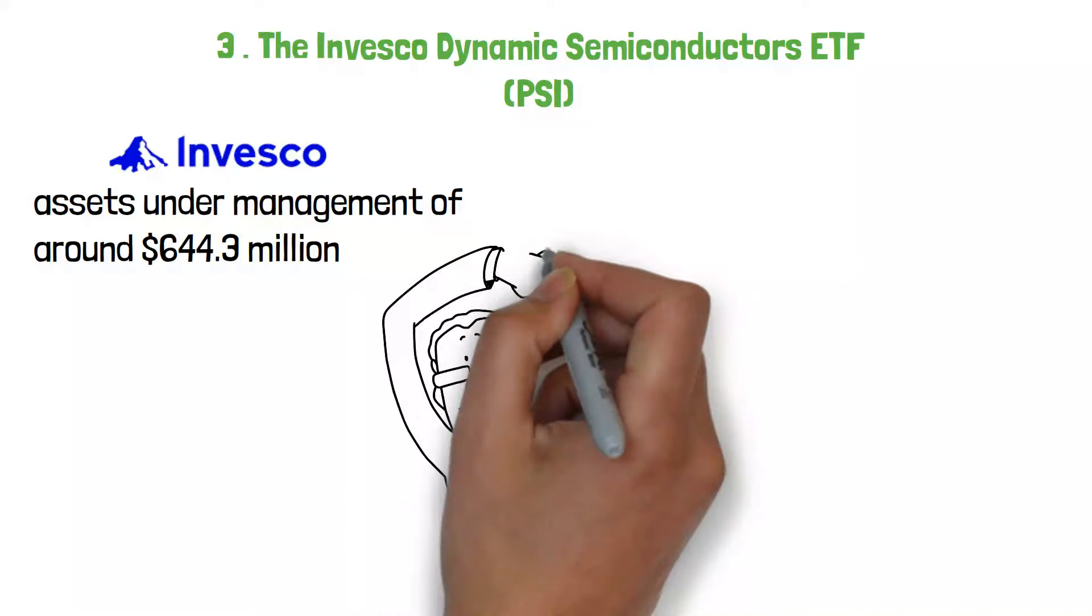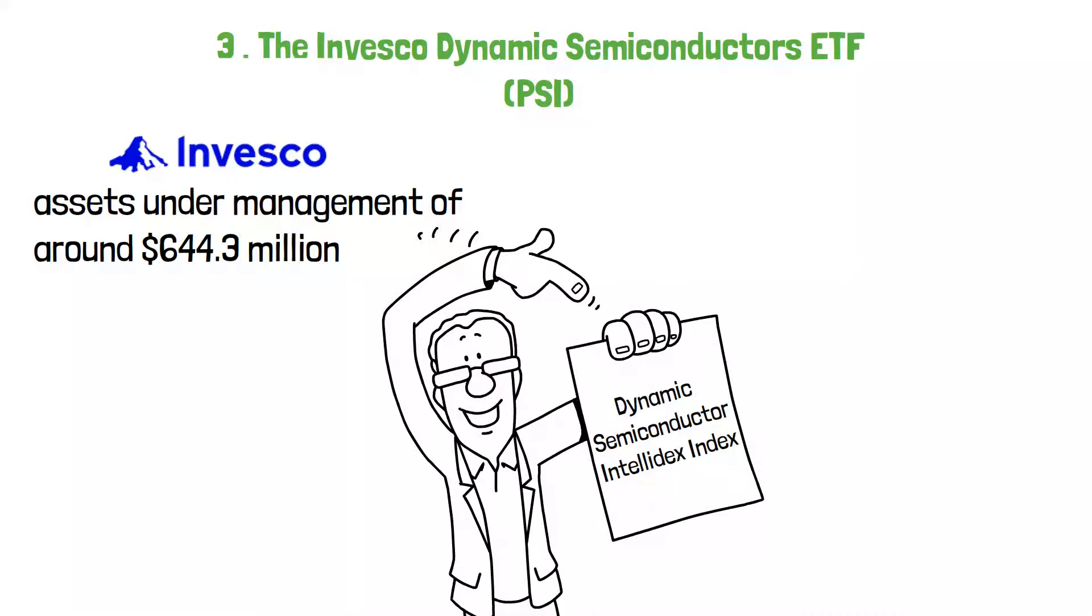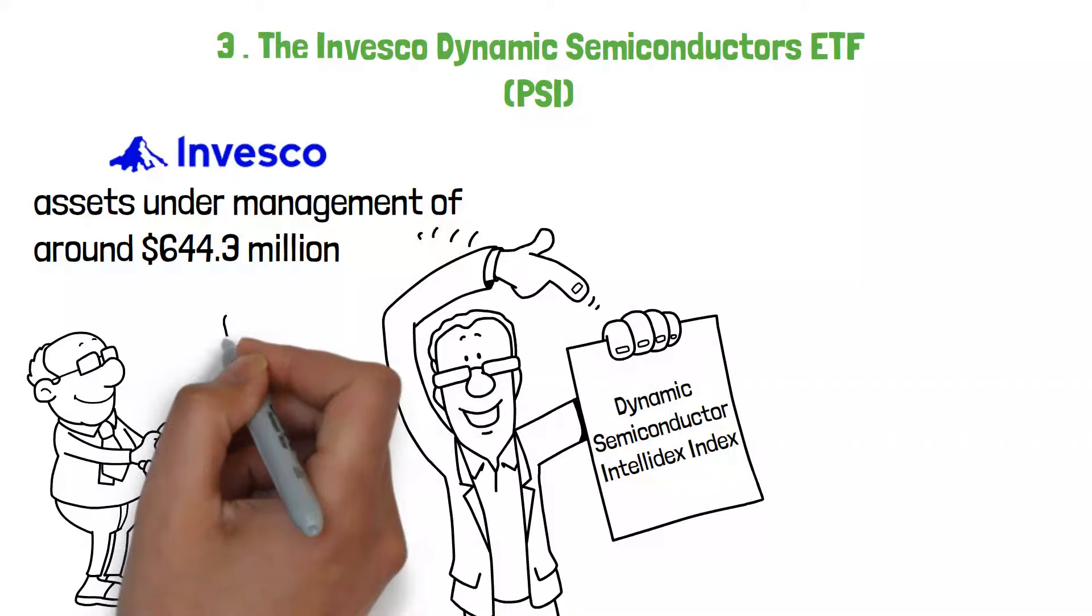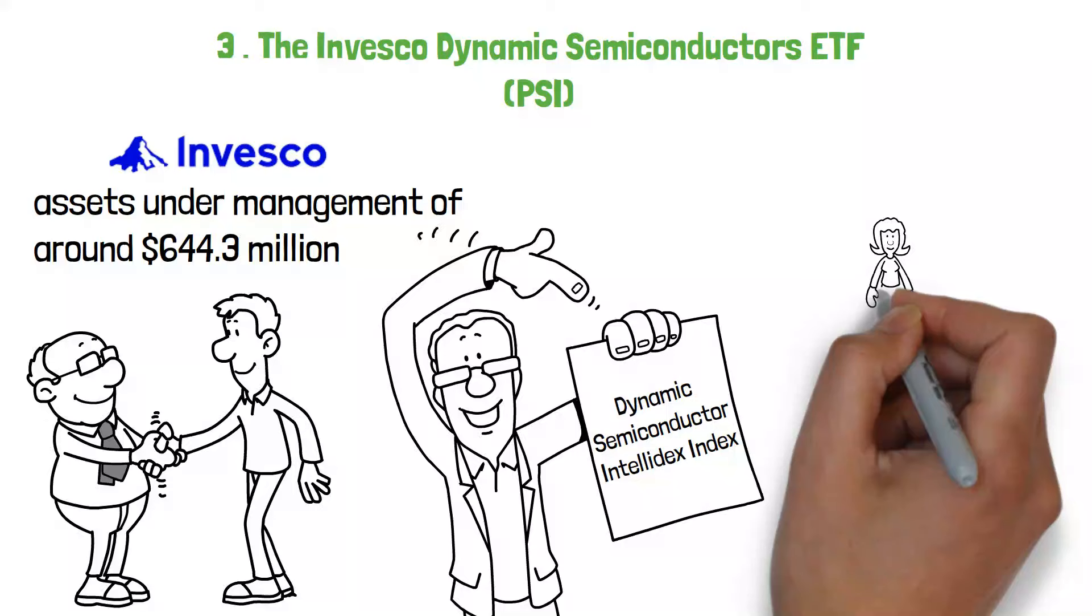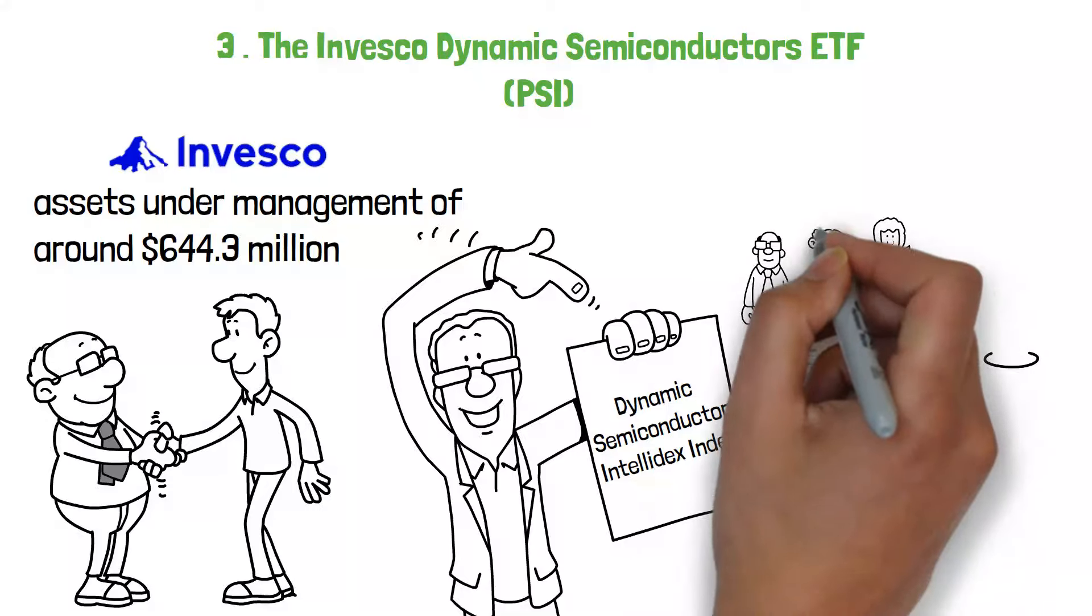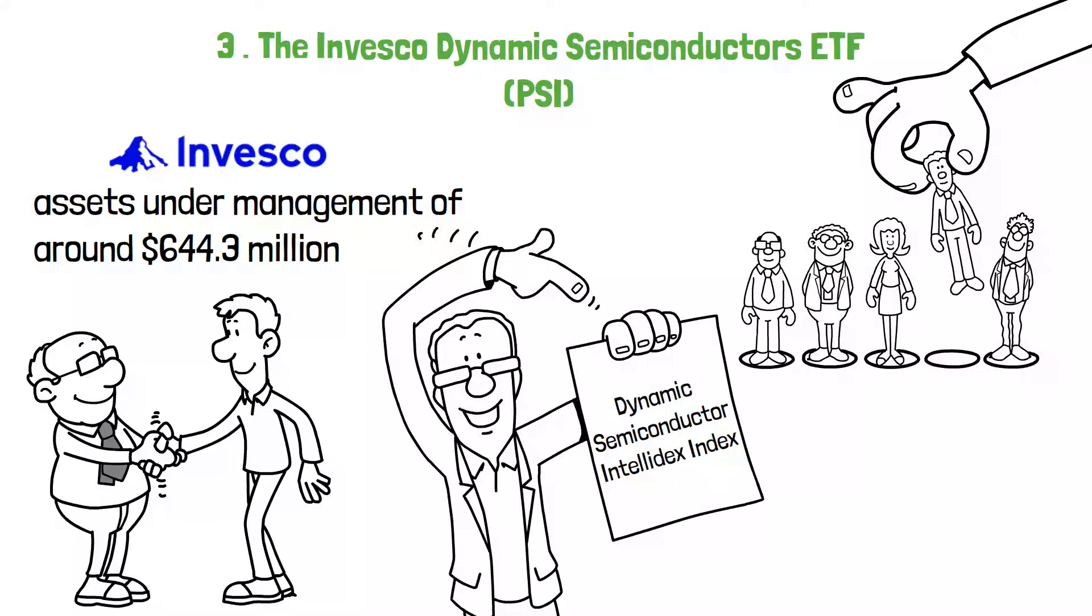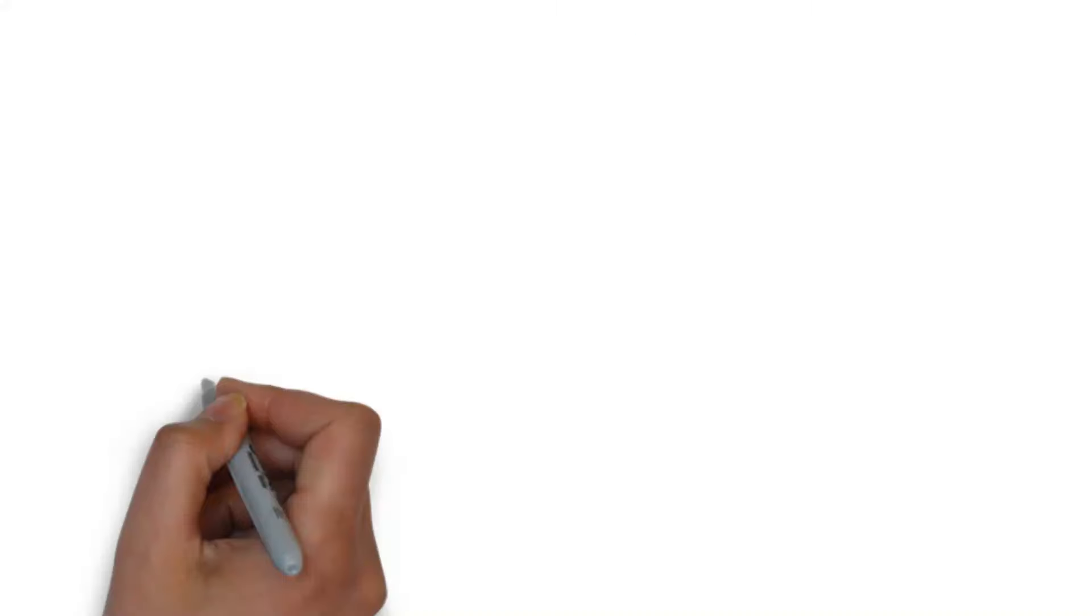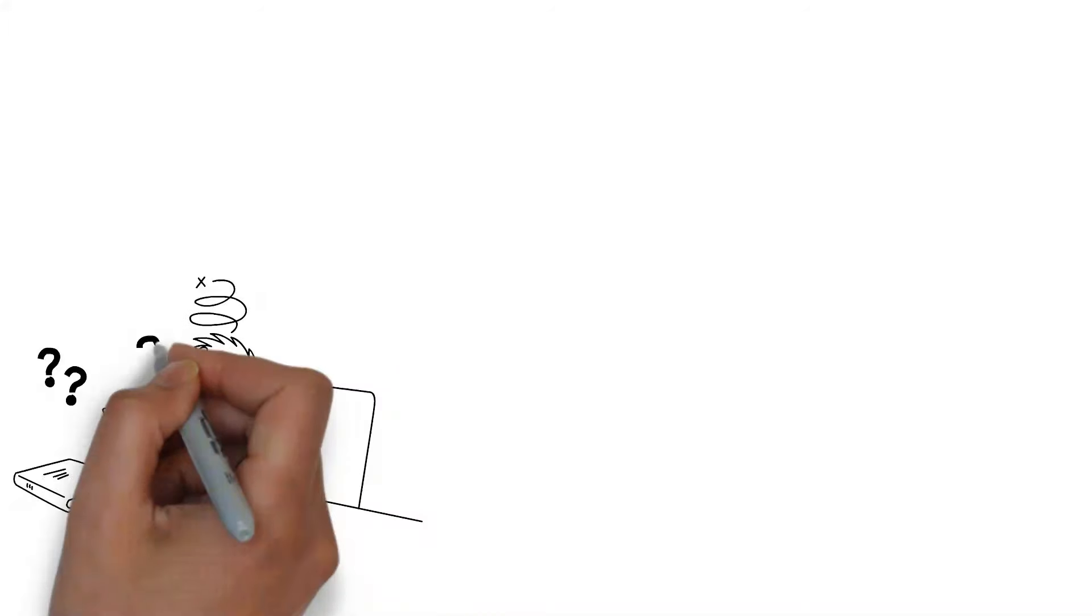This ETF is meant to replicate the performance of the Dynamic Semiconductor Intellidex Index, which comprises 30 semiconductor firms that are traded in the U.S. The selection of these firms is based on numerous aspects, including fundamental growth, stock value, investment timeliness, and risk concerns. This strategy tries to identify organizations with higher potential for future development.